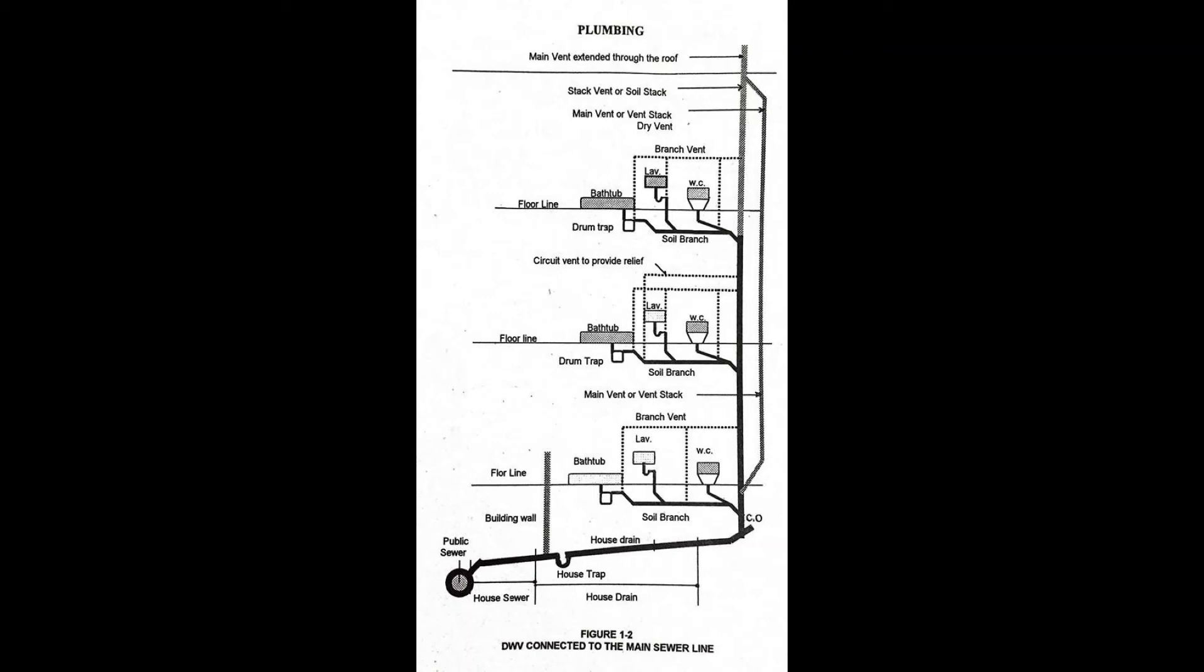Secondary branch is any branch in a building drain other than the primary branch. Sewerage or sewage works is a comprehensive term including all construction for collection, transportation, pumping, treatment, and final disposition of sewage.